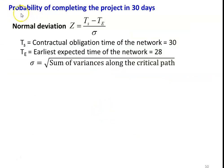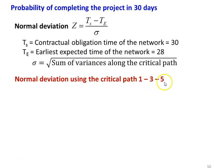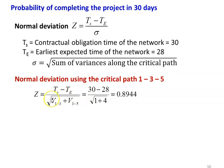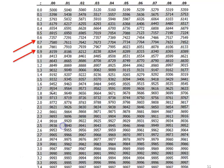Now we calculate the probability of completing the project in 30 days. To calculate the probability, first we find the normal deviation Z = (Ts - T) / sigma, where Ts is the contractual obligation time of 30 days, T is the earliest expected time of 28, and sigma is the square root of the sum of variances along the critical path. Using critical path 1-3-5: Z = (30 - 28) / sqrt(V(1,3) + V(3,5)) = 2 / sqrt(1 + 4) = 0.8944. Using the normal distribution table, the probability is 81%.